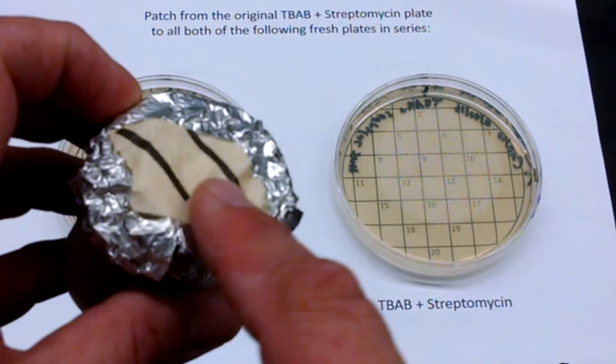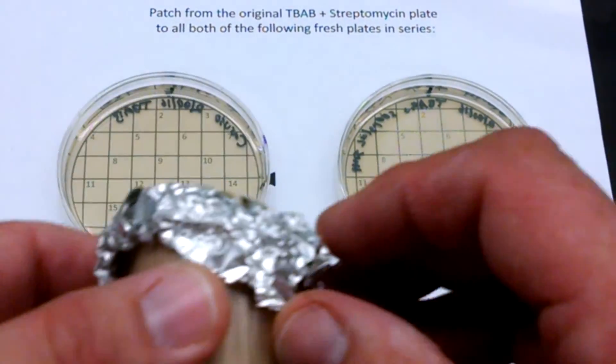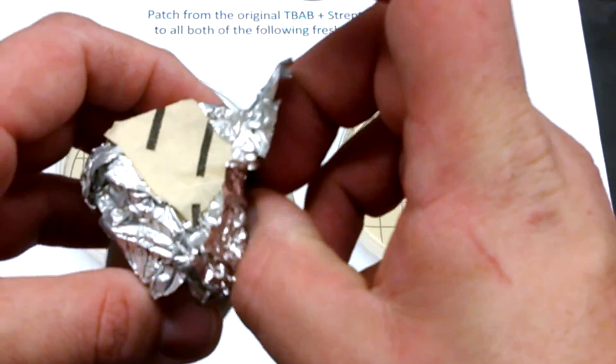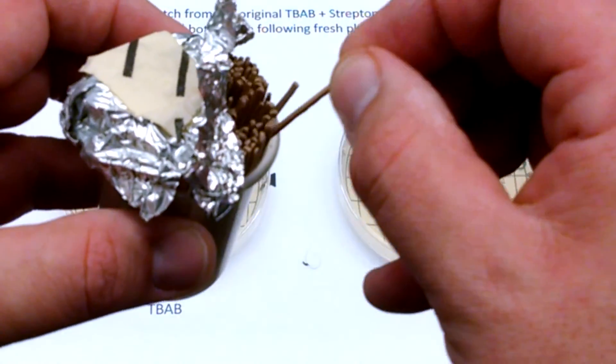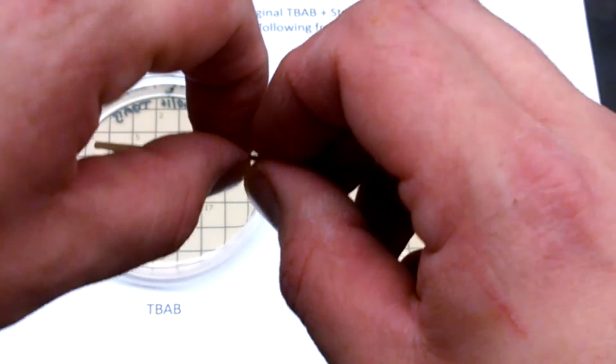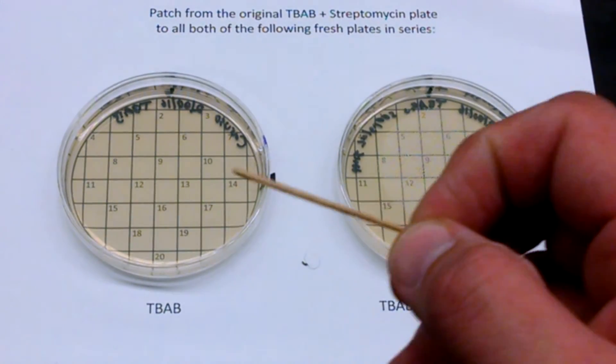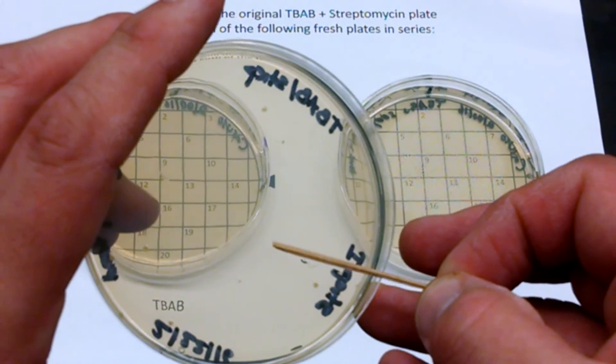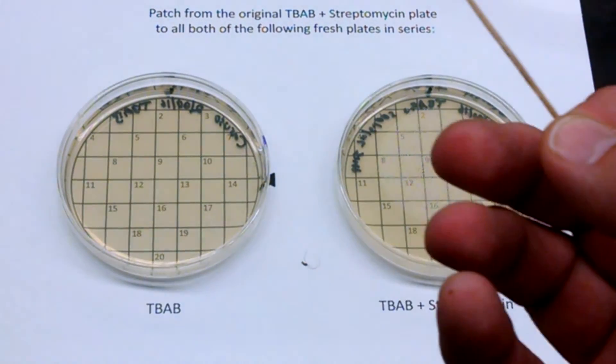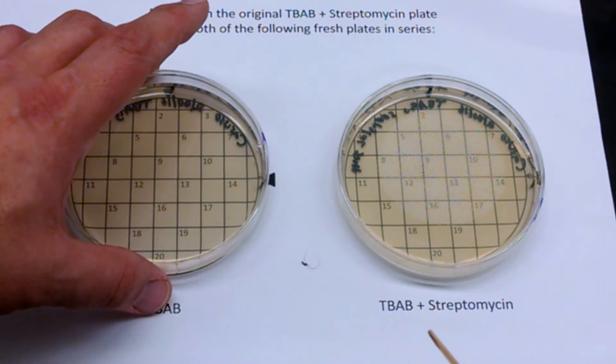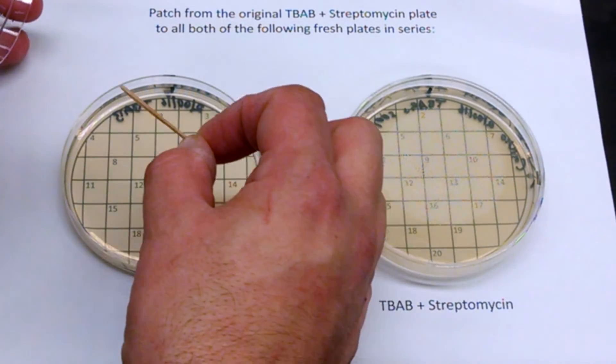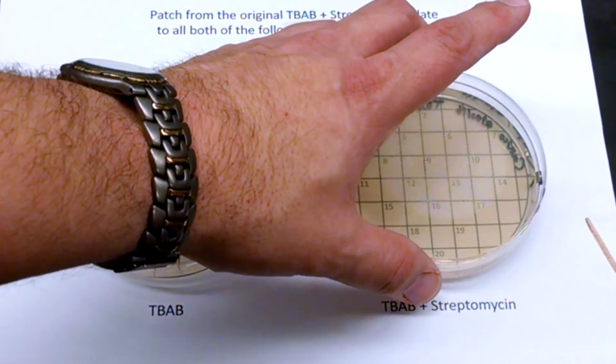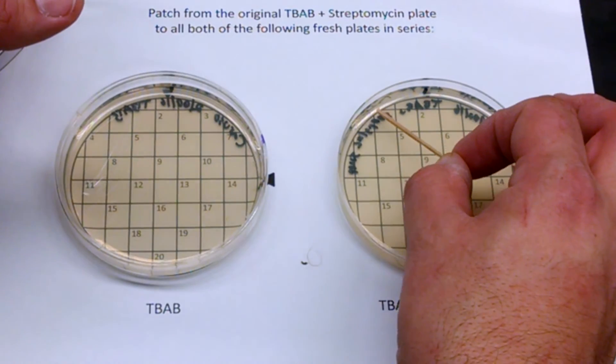So we have these sterile toothpicks. You can tell by the tape that has the black lines on them. We'll use the end that's down at the bottom that we haven't touched. And we're just going to touch a colony. Just touch. You don't have to gouge it. You don't have to smash it or anything. Just touch it. And then open the lid. And then we're just going to draw a little line.